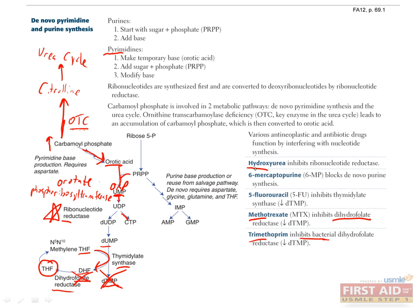Some other antineoplastic therapies that relate to nucleotide synthesis are hydroxyurea, which inhibits ribonucleotide reductase, 6-mercaptopurine, which inhibits purine synthesis, and 5-fluorouracil, which inhibits thymidylate synthase.